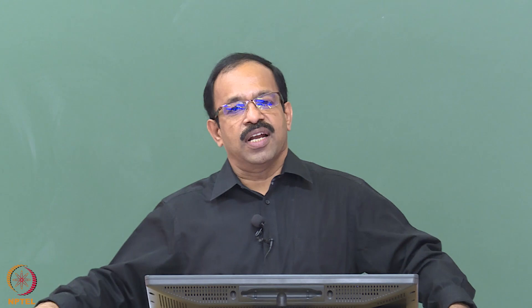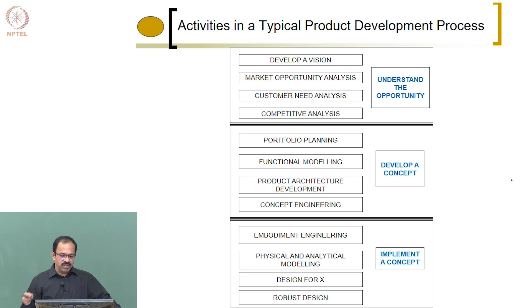Today we will start the product development stages. As I told you, there are 3 different stages in product development, the first one being understanding the opportunity. We saw in the last class there are different stages in understanding the opportunity also. We will look at the first part of understanding the opportunity — how do we actually identify a good opportunity to develop a new product. That is going to be the discussion today.